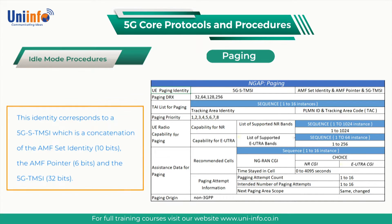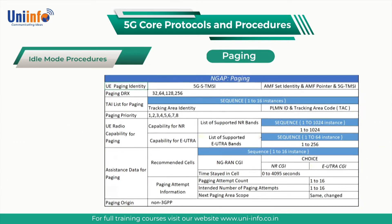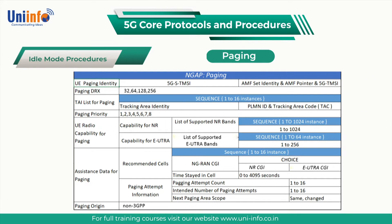the AMF pointer (6 bits), and the 5G-TMSI (32 bits). The 10 least significant bits (LSB) of the 5G-TMSI are used to determine the paging frames and the paging occasions for the UE.